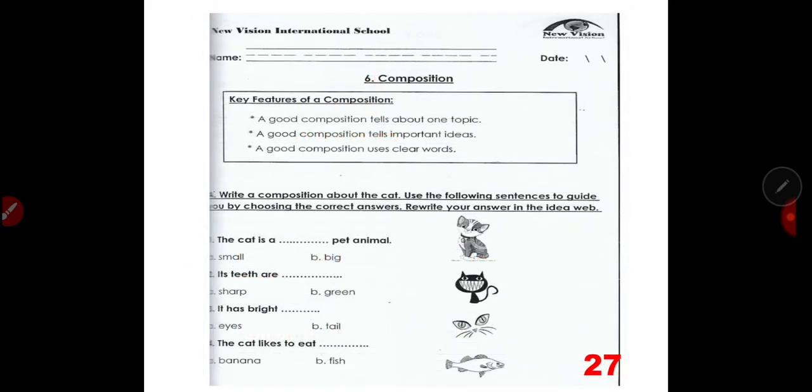Page 27, which is composition. Write a composition about a cat. Use the following sentences to guide you by choosing the correct answers and then write it in the idea web. In this part, you are going to circle the correct answer and then write it on the line. The cat is blank pet animal. The cat is a small or big pet animal? Of course, a small animal. And then write it here. Small.